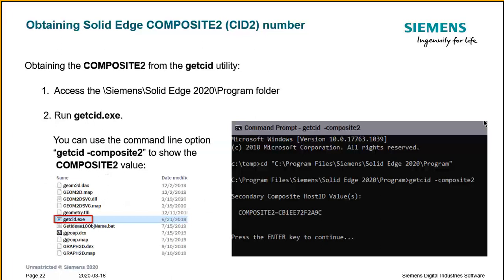Finally, you can access the same information with the getcid.exe executable, which is in the program folder under Siemens, wherever you have Solid Edge installed. Just run it and it will return the Composite 2 value. You can also use a DOS window and run it via command line — very flexible options.